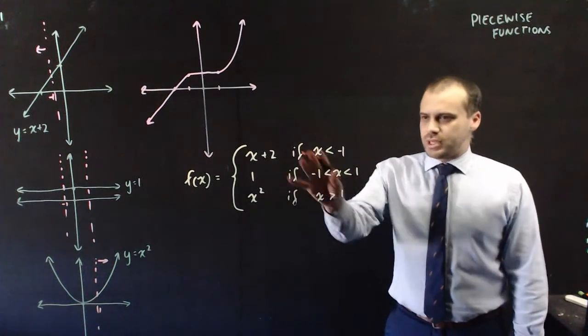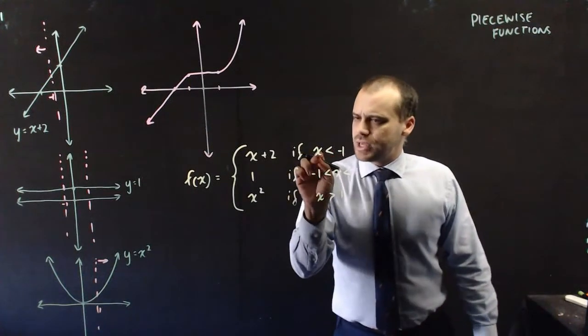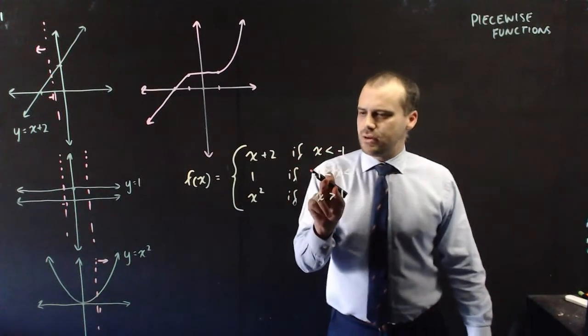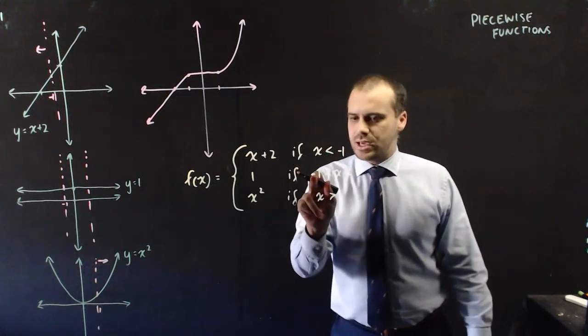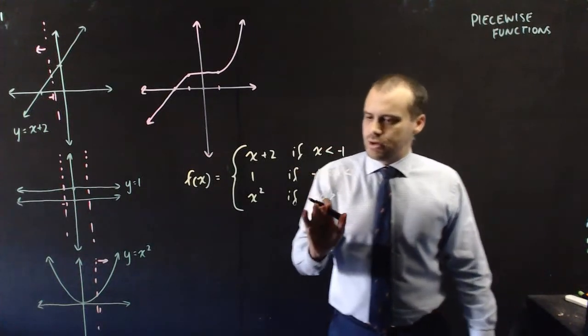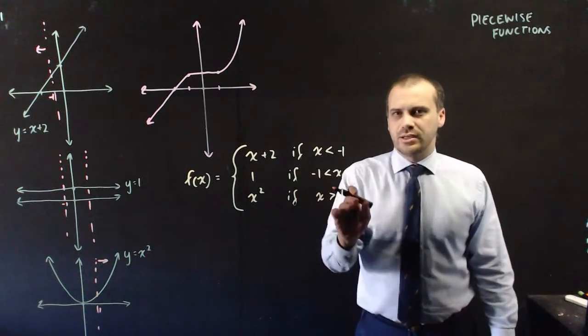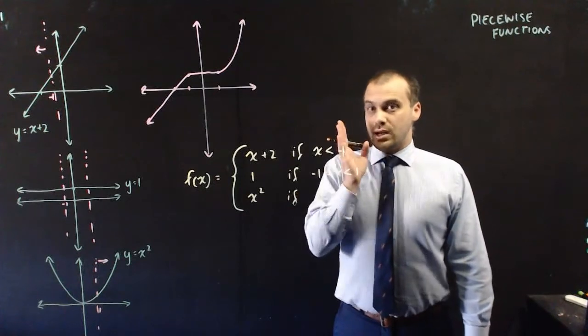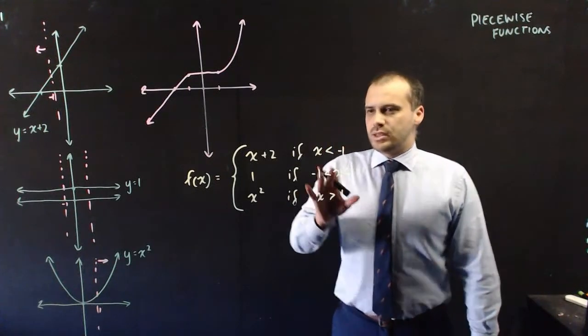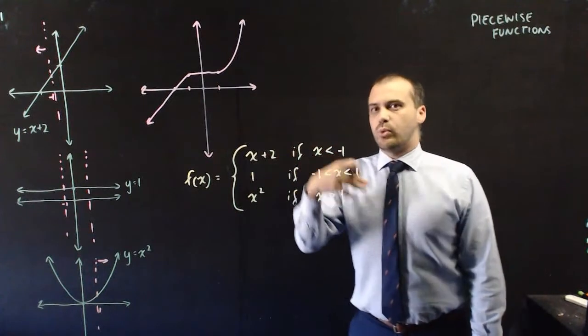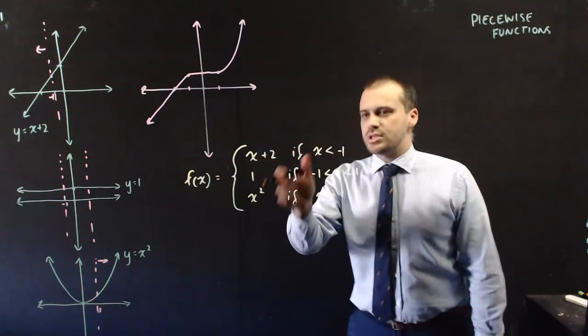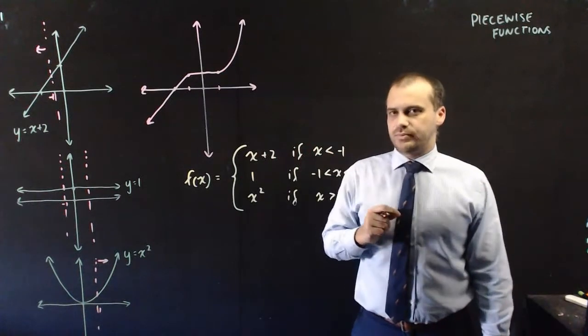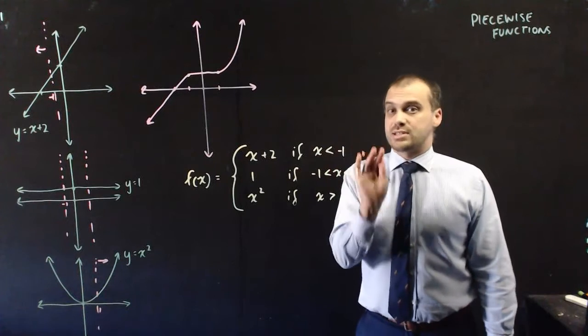Now there is a problem here. This is not correct. Because I'm saying if x is less than negative 1, and here I'm saying if x is between negative 1 and 1, and here I'm saying if x is greater than 1. There are two numbers here that I am not accounting for: negative 1 and positive 1. There is no instruction here on what to do, what function to use if x is exactly negative 1.